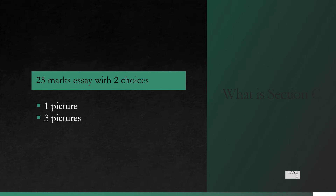What is Section C? Section C is a 25-mark essay with two choices. It's usually a one-picture or three-pictures essay. They will usually give you a one-picture essay or three-pictures essay. Sometimes they might give you more than three pictures, but that rarely happens.